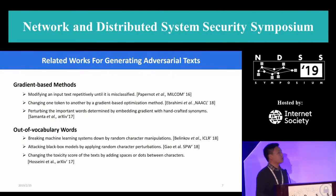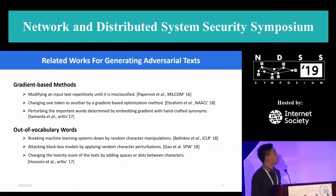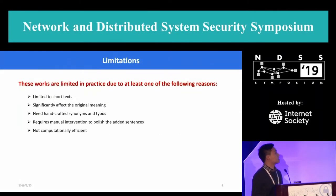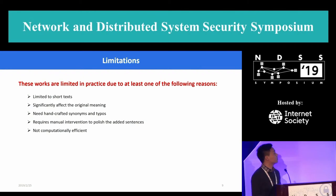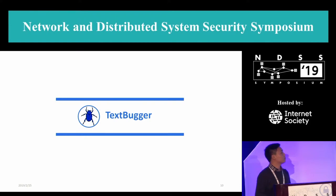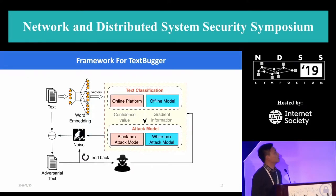Such challenges have motivated intensive research on generating adversarial texts, and existing works can be summarized into four main categories, such as gradient-based methods or replacing words with out-of-vocabulary ones, and some other methods. However, even though these methods are similar, they are limited in practice due to at least one of the following reasons. For example, many of them are limited to short texts, and they are not computationally efficient. Given these limitations and challenges, we propose TextBugger, a general framework for generating adversarial texts against state-of-the-art text classification systems under both white box and black box settings.